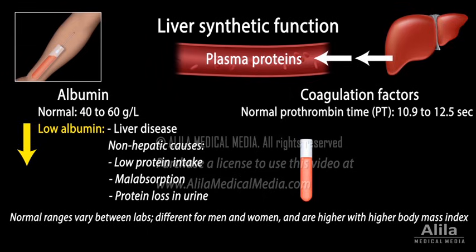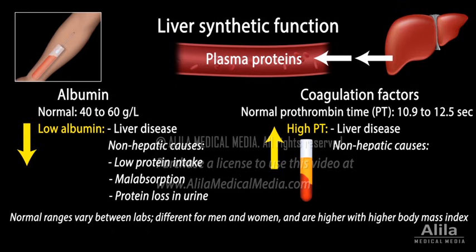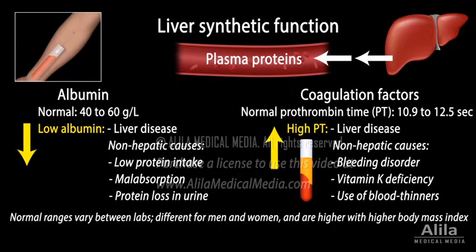Prothrombin time, PT, or pro-time test measures the time the blood takes to clot. A decline in liver function leads to less coagulation factors produced and delays coagulation time. However, a high PT may also indicate a bleeding disorder, vitamin K deficiency, or use of blood-thinning medications, such as warfarin.